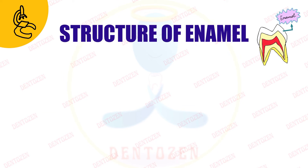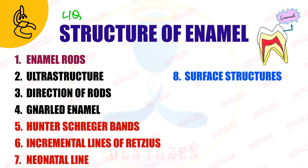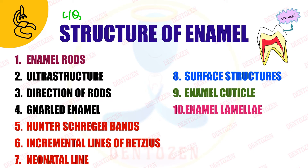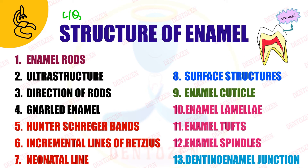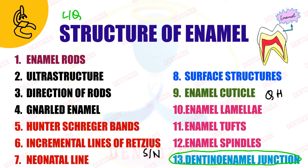The dentino-enamel junction can be part of your long question when you are asked about the structure of enamel in detail, where you have to describe all these microscopic structures. Today's video will discuss dentino-enamel junction in detail. This can also come as a short note, or as part of your long question when you are asked about the hypocalcified structures of enamel, since the dentino-enamel junction is a hypocalcified structure.